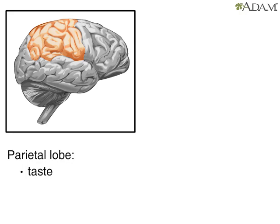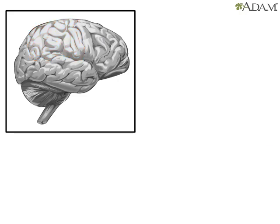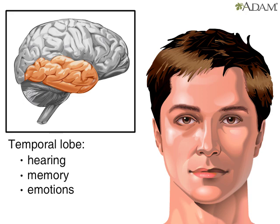There are two parietal lobes, one on each side of the brain. The parietal lobes are located behind the frontal lobe, towards the back of the head, and above the ears. The taste center is located in the parietal lobes. All sounds are processed in the temporal lobe. They are also important for learning, memory, and emotion.